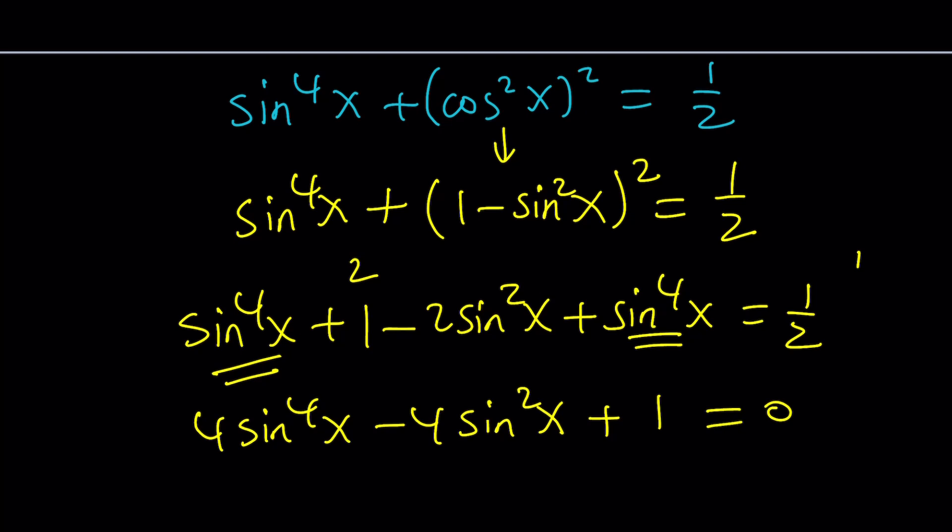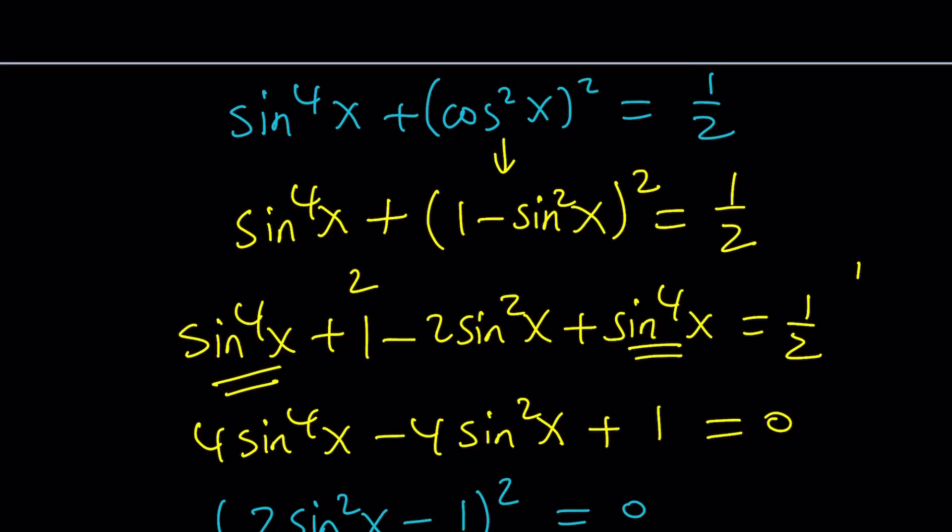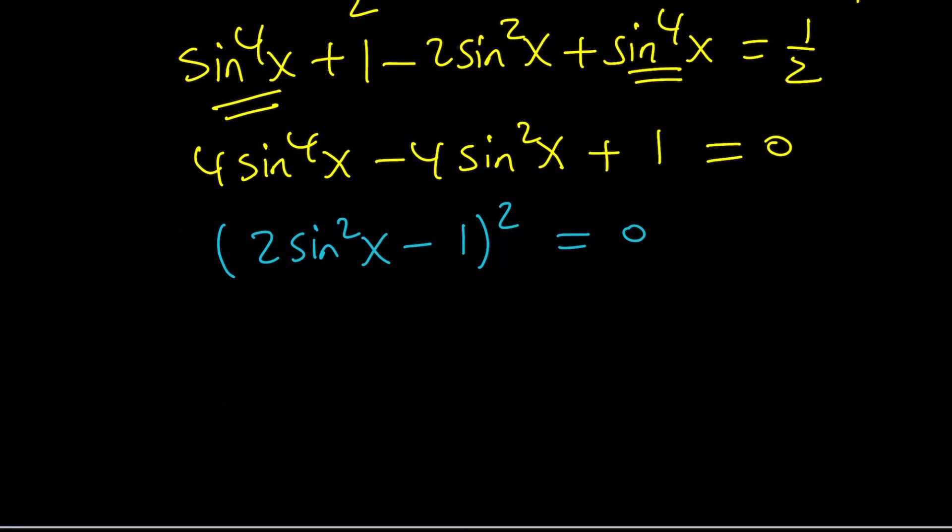Now, this is nice because this is a perfect square. And that's perfect, isn't it? So we can write this as two sine squared x minus one squared equals zero. And from here, we are still using x, not 2x, right? Because we didn't use double angles.